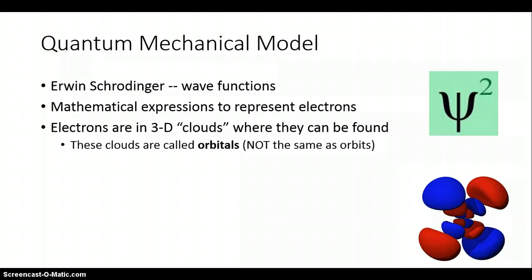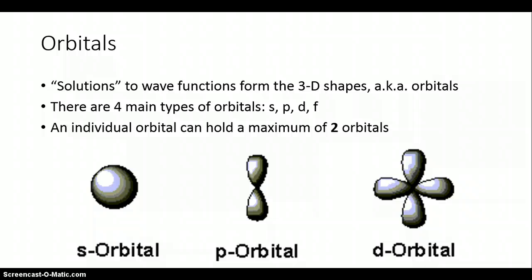These three-dimensional regions are called orbitals. It's not the same thing as that term orbits we saw earlier with the Bohr model. One thing you should know is that orbitals are essentially solutions. These are like the mathematical answers to those wave functions that we saw earlier. They actually form these 3D shapes.